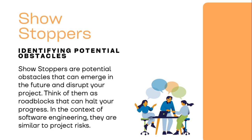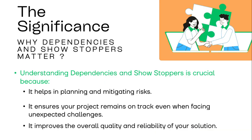Whether it's Smart India Hackathon or any project development, it is very important to identify these two things. Unless you identify what can lead your system to stop — for example, maybe an older version doesn't run on a newer version — your project won't work. You need to identify the potential obstacles that may not exist now but can emerge in the future and create roadblocks for your project.